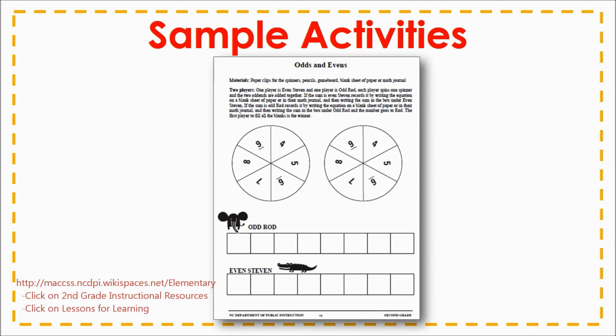In the Odds and Evens activity, students spin both spinners and find the sum. If the sum is even, the player who is Even Steven records the equation on a separate sheet and the sum in one of the boxes under Even Steven. If the sum is odd, the player who is Odd Rod records the equation on a separate sheet and the sum in one of the boxes under Odd Rod. The first player to fill all of their boxes wins the game.